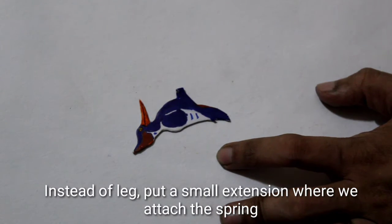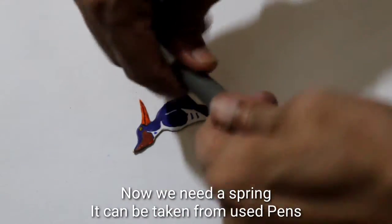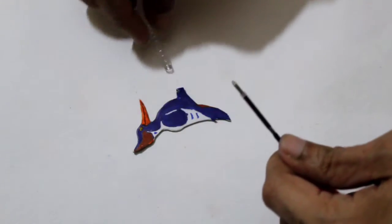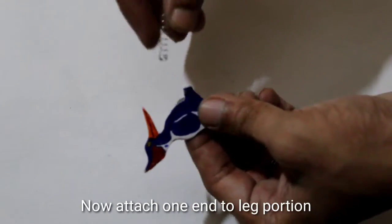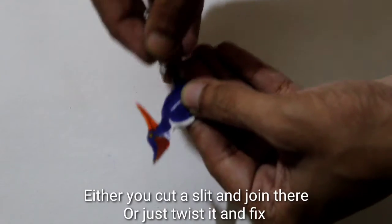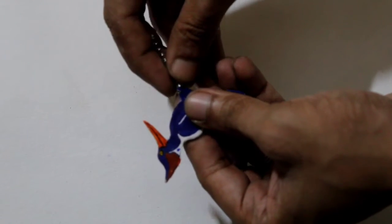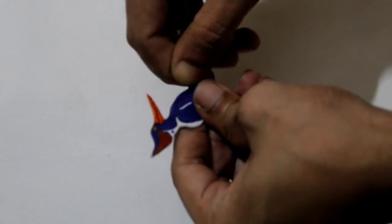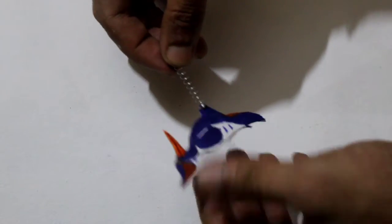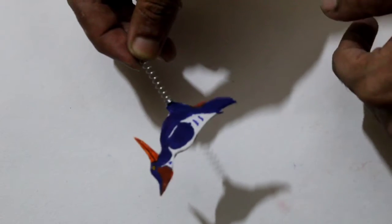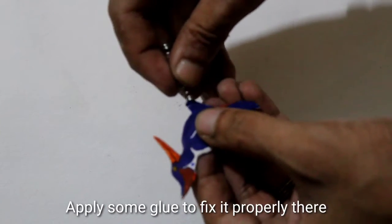Now I'll attach the spring. You can use a pen to help attach the ring. Press it through the slit and attach the ring.